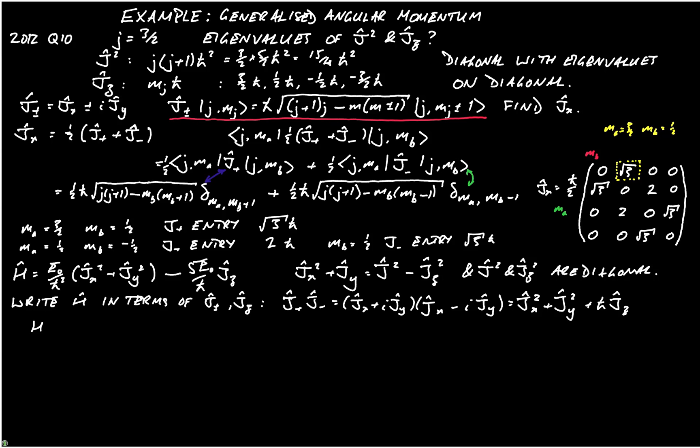So now we can write h is equal to e0 over h-bar j plus j minus minus 6 e0 over h-bar jz.